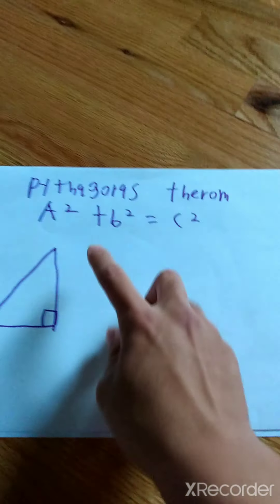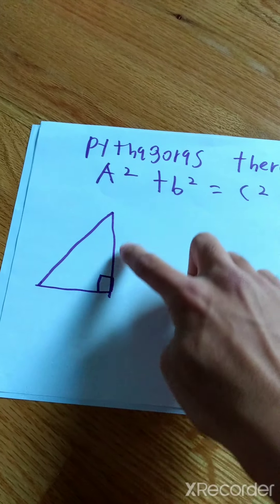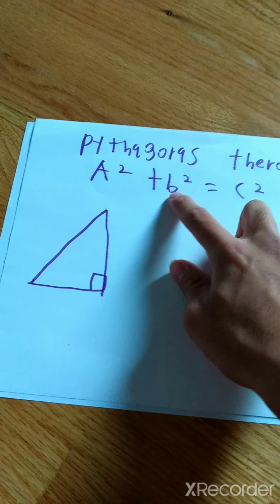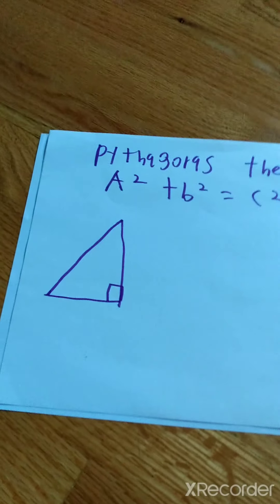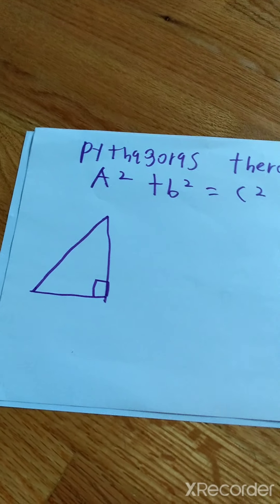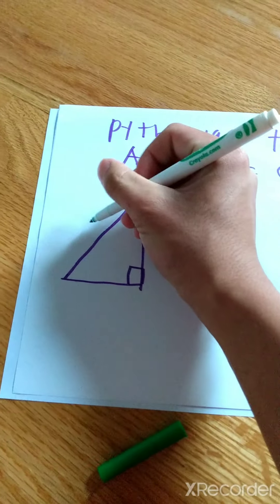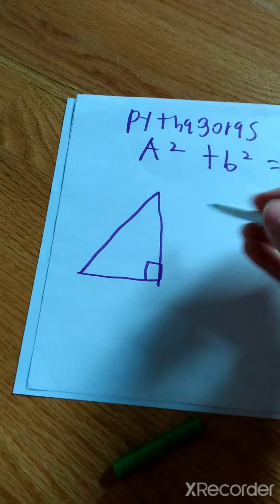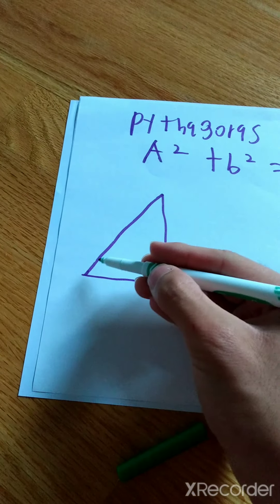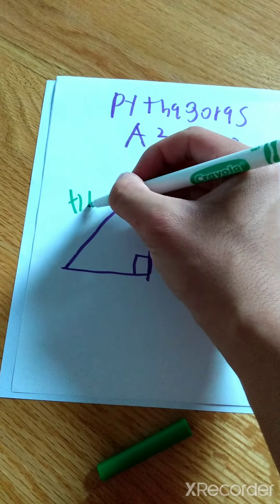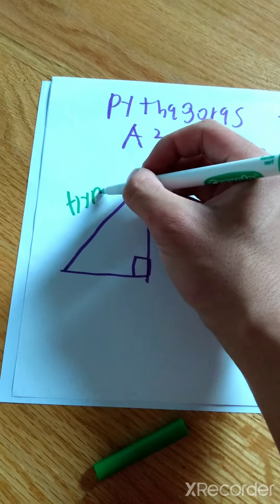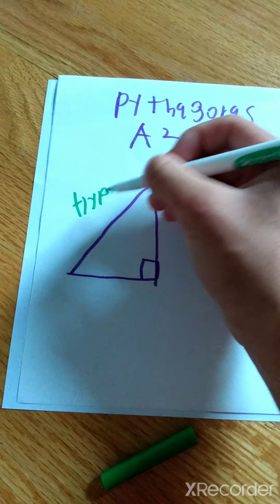The formula for Pythagorean Theorem is A squared plus B squared is going to equal C squared. Your C squared is going to be the longest line of the right triangle, or the longest line for the side of the right triangle. That is called your hypotenuse, and it's abbreviated as HYP.